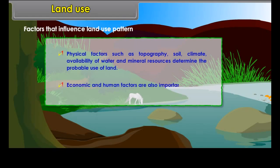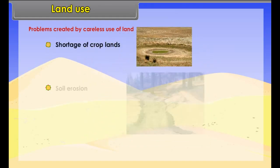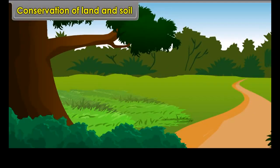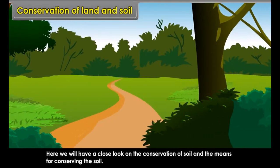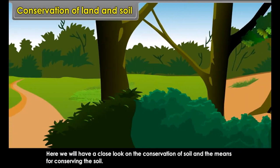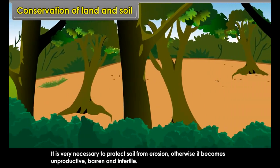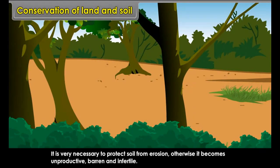Economic and human factors are also important. Serious problems created by careless use of land include shortage of crop lands, soil erosion and desertification. Conservation of land and soil is crucial. It is very necessary to protect soil from erosion; otherwise it becomes unproductive, barren and infertile.